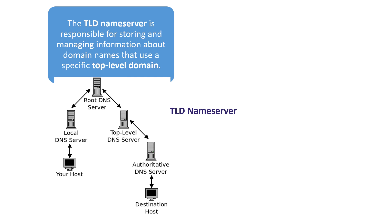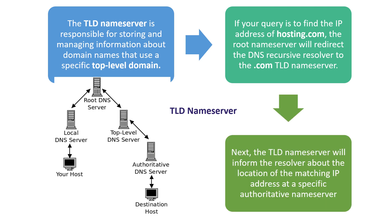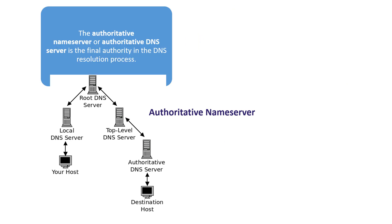The TLD name server is responsible for storing and managing information about domain names that use a specific top-level domain. For example, if the query is to find the IP address of hosting.com, the root name server redirects the DNS resolver to the .com TLD name server. TLD stands for top-level domain — examples include .com, .net, and .org. The TLD name server then informs the resolver about the location of the matching IP address at the specific authoritative name server.